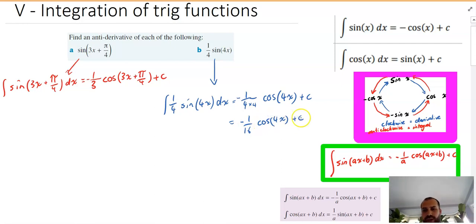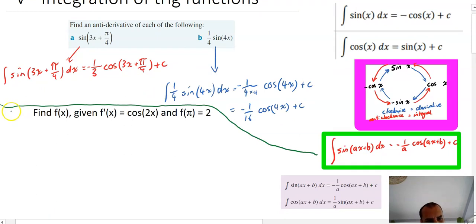Okay, now I'm going to do one more thing here because with trig functions we've had trouble in the past doing tangents and things like that so we might have some trouble finding our c value as well. Example three we'll call it. Find f of x given f dash of x equals cos 2x and f of pi equals 2.